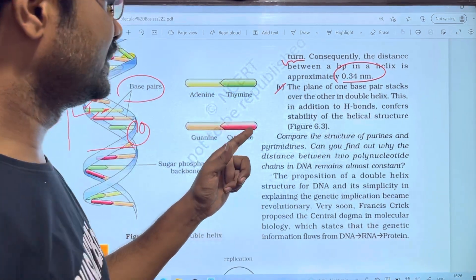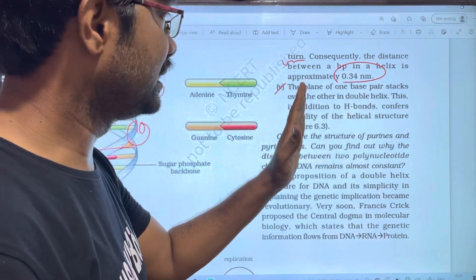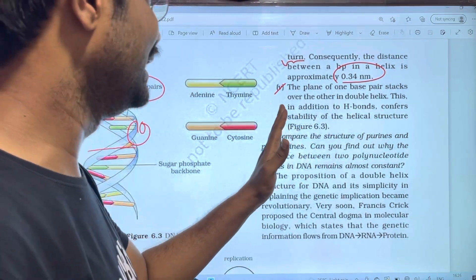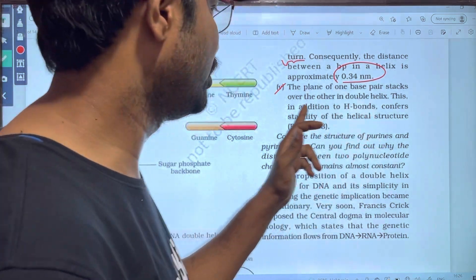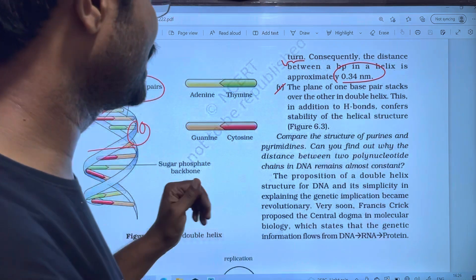The plane of one base pair stacks over the other in double helix. In addition to hydrogen bonds, this stacking confirms stability for the helical structure.